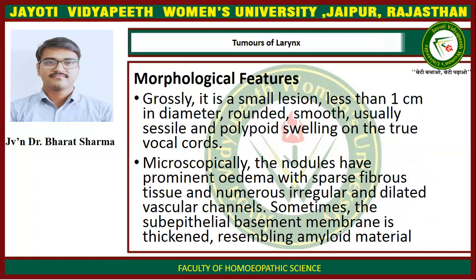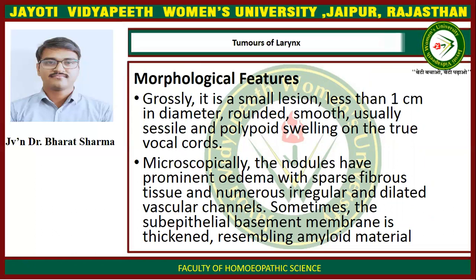Morphological features of laryngeal nodules: Grossly, it is a small lesion, less than 1 cm in diameter. It is rounded, smooth, usually sessile and polypoid swelling on the true vocal cords. Microscopically, the nodules have prominent edema with sparse fibrous tissue and numerous irregular and dilated vascular channels. Sometimes the sub-epithelial basement membrane is thickened and resembles amyloid material.